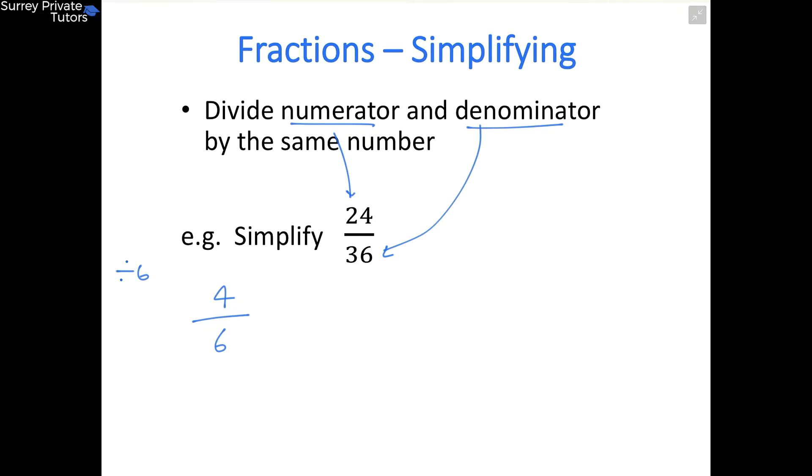We can go further because 4 and 6 can both be divided by 2. Dividing both by 2, we get 4÷2=2 and 6÷2=3. We can't divide 2 or 3 by any further numbers, so that fraction is now in its simplest form.